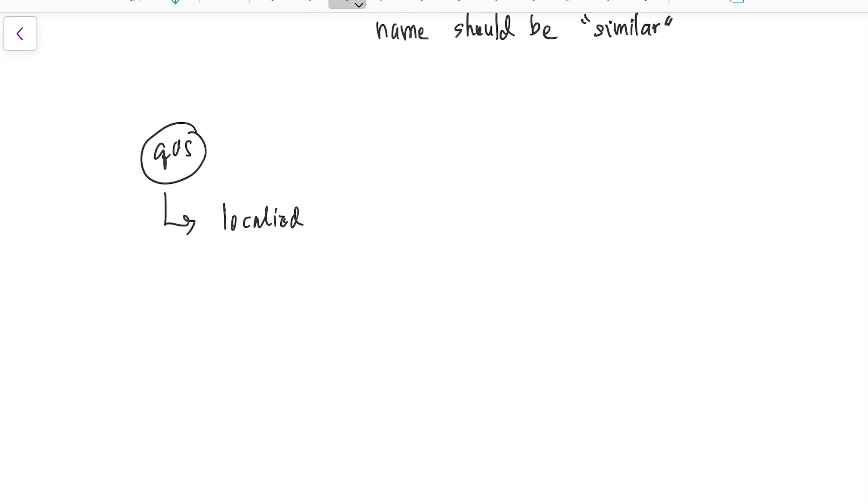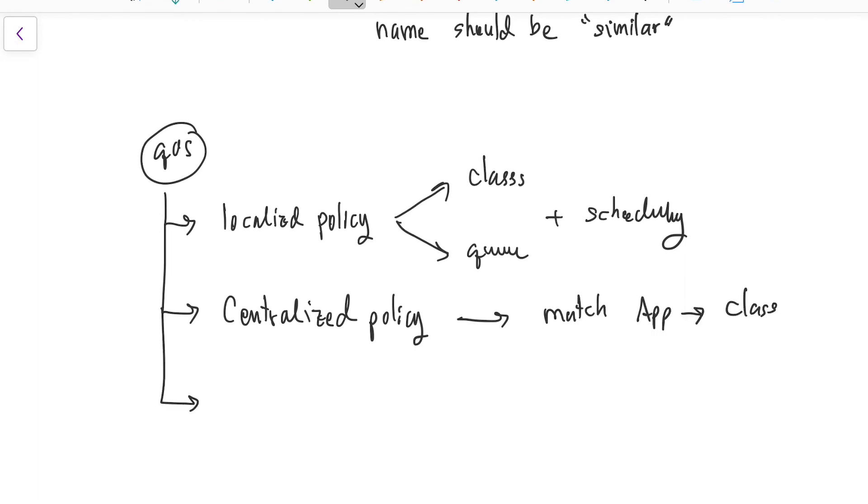All right, in summary in this tutorial, to do QoS, first we need to create the localized policies, which we can configure the class and the queue. This is the scheduling part. Second is we need to configure the centralized policies to actually put the traffic from the LAN side to the WAN side, having those applications mapped into the class. The last thing is we go to the interface WAN and configure the shaping rate and the QoS map to that feature template of the interface there. Then the configuration of the QoS of the Cisco SD-WAN is completed.